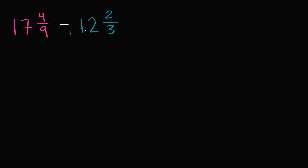So what I'm going to do is rewrite these mixed numbers. I'm going to write this as 17 and 4/9 minus 12 and 2/3. I'm going to write the 12 right under the 17 and the 2/3 right under the 4/9. Let me make it very clear: we are subtracting 12 and 2/3 from 17 and 4/9.